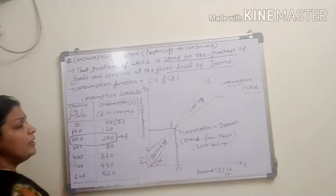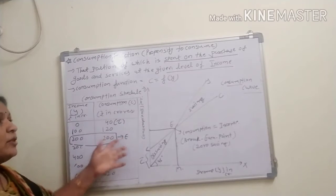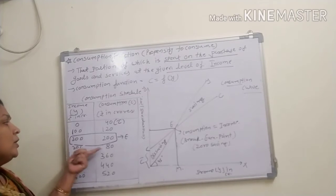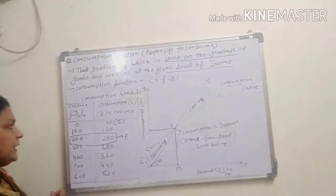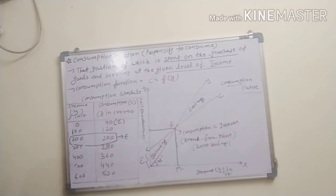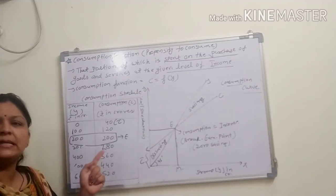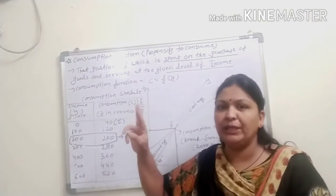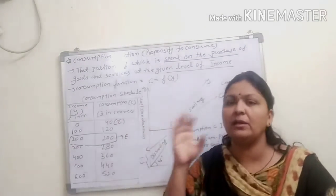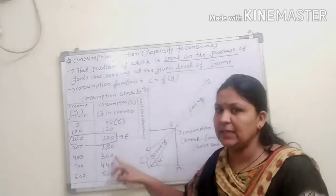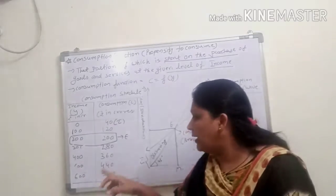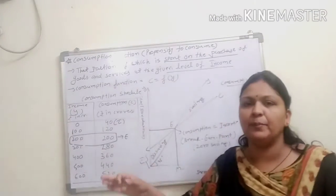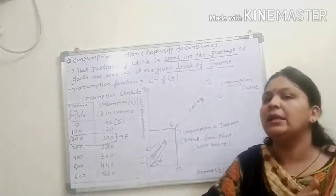At income 200 and consumption 200, this point is called E — the break-even point. After the break-even point, things change. When income increases to 300, consumer consumes only 280 rupees — less than income, saving 20 rupees. At 400 income, consumption is 360; at 500, consumption is 440; at 600, consumption is 520. After the break-even point, consumer consumes something but less than the national income.